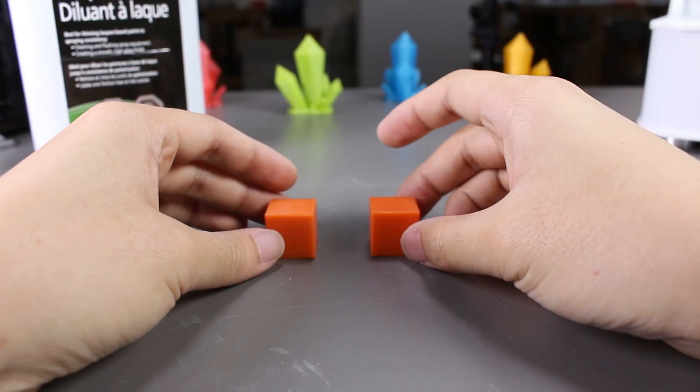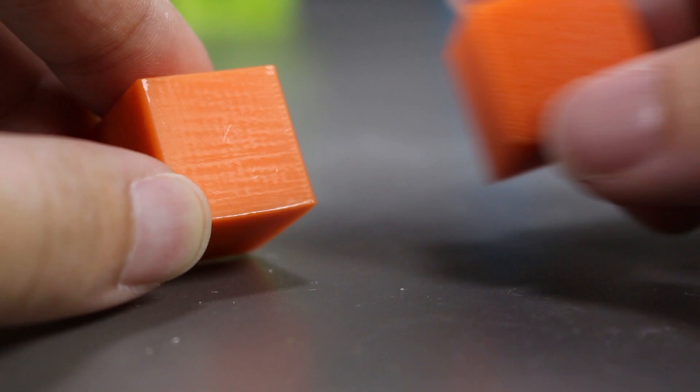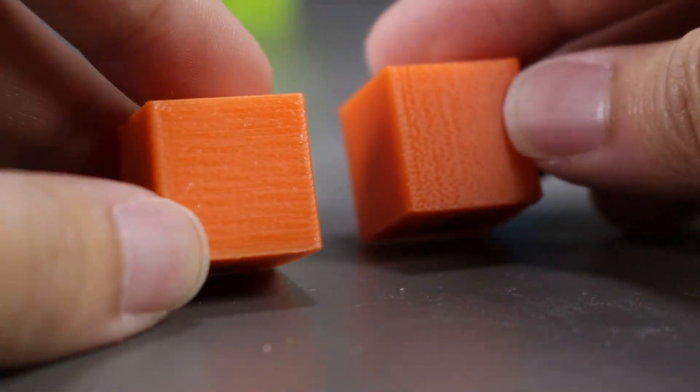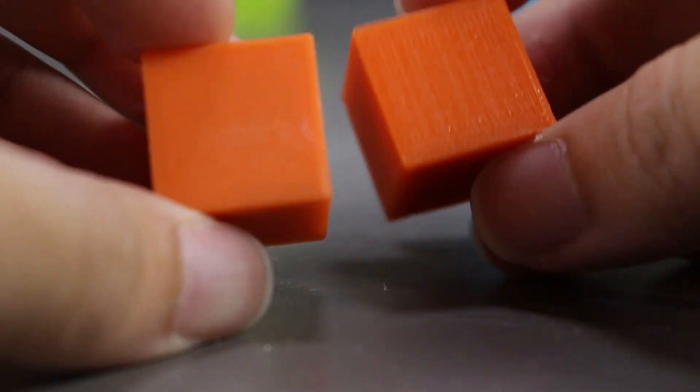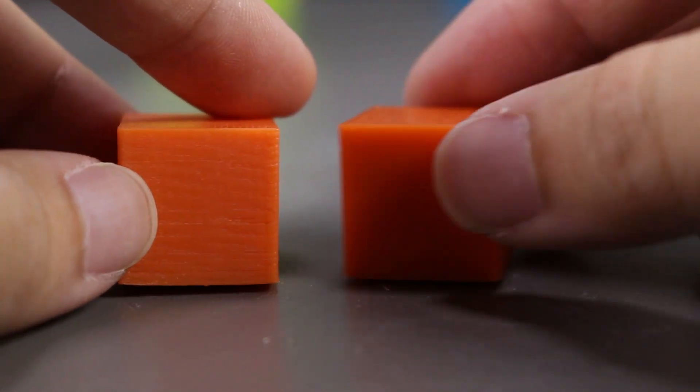Here's a side comparison to one that wasn't exposed to the thinner. We can totally see the difference between the two. The one on the right, you can still see all the individual layers. And the one on the left, you can hardly see or feel the lines on the print.